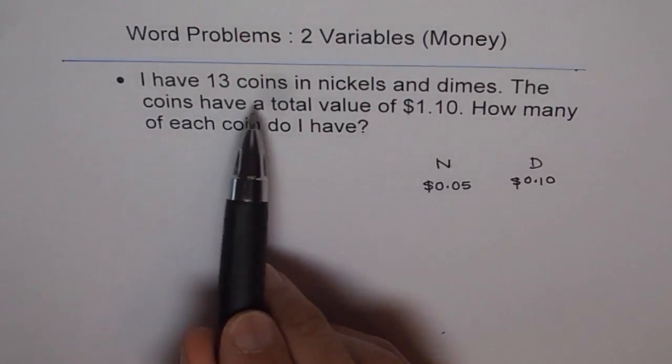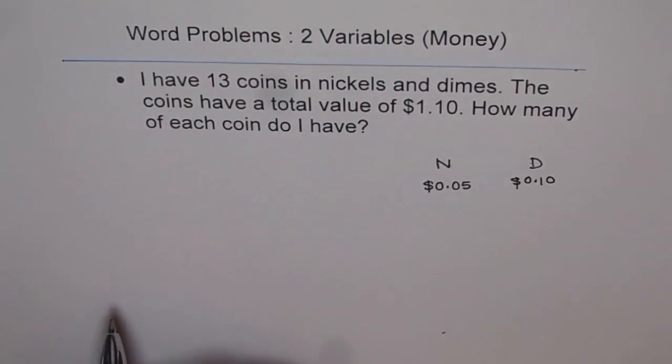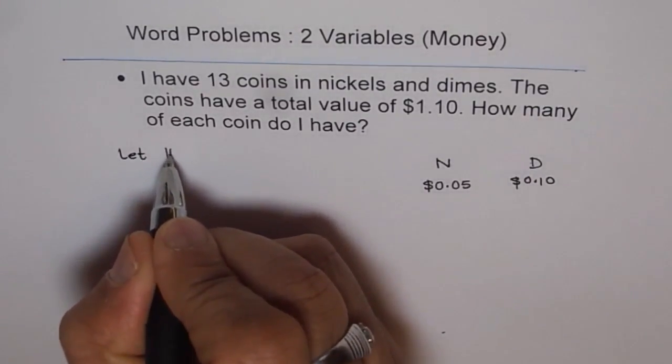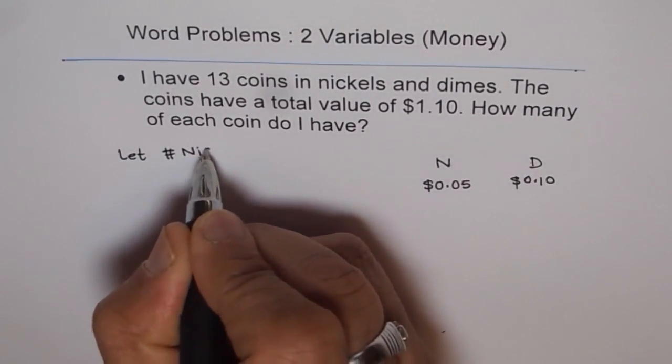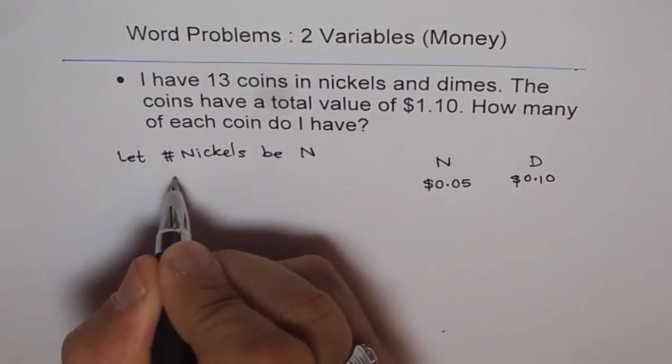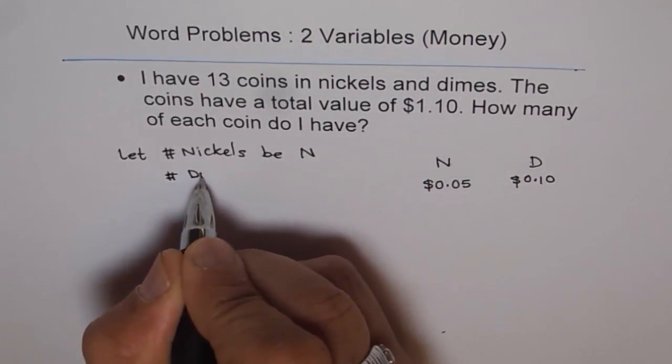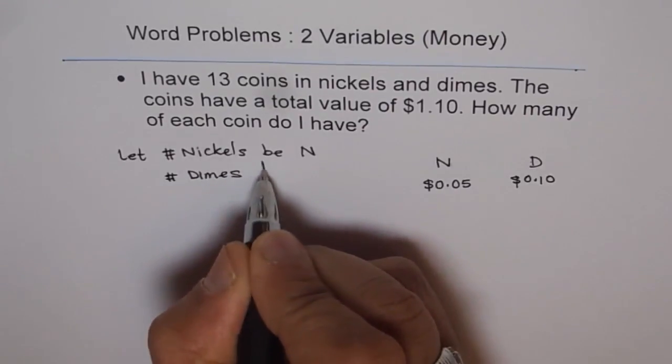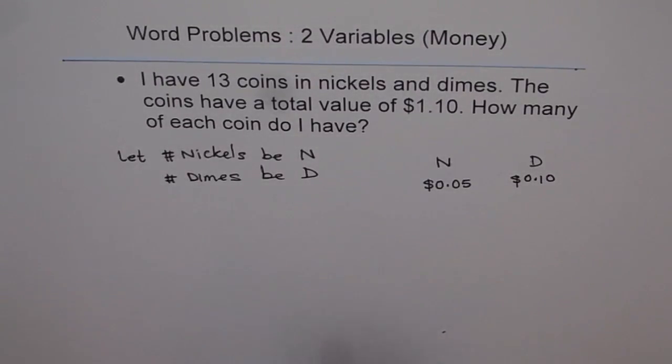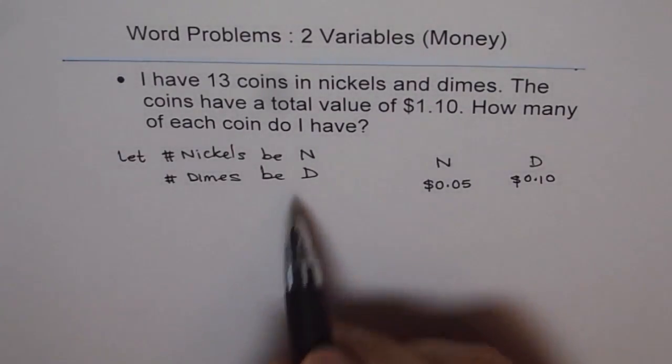I have 13 coins in nickels and dimes. So let me first define the variables. So variables for me will be, let the number of nickels be n, and number of dimes be d. So instead of x and y, I'm taking n and d, so that we are not lost. We know exactly what we're talking about.